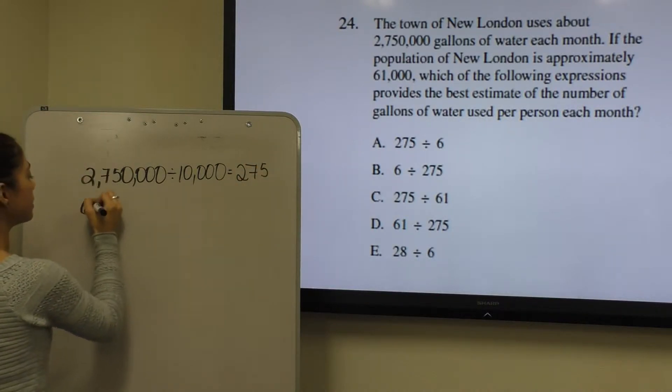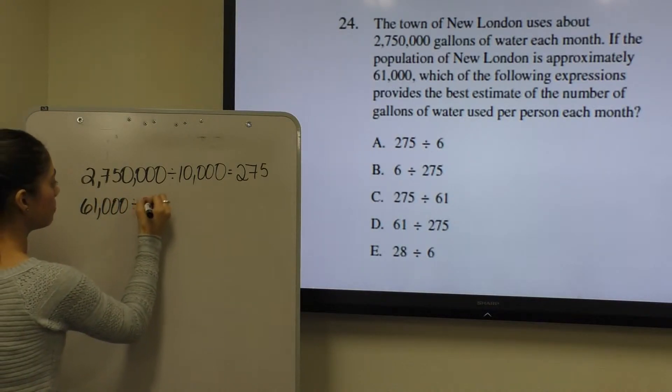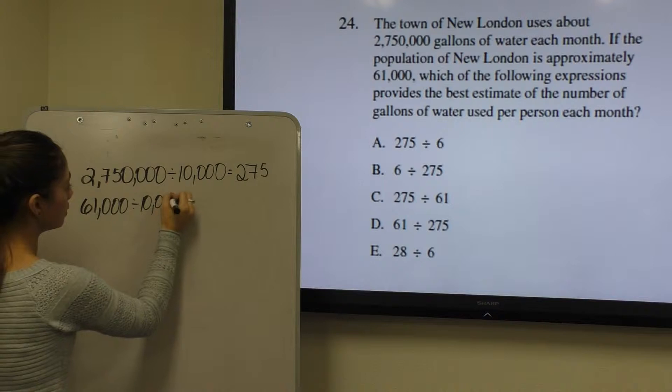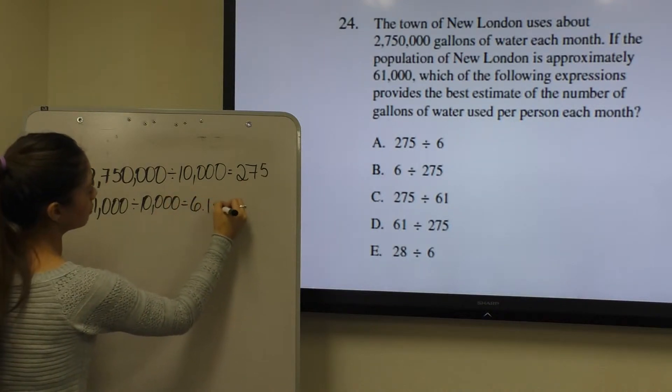And when we divide 61,000 by 10,000, we get 6.1, which we can round to 6.